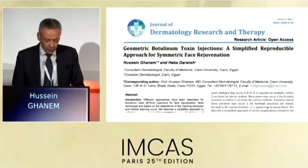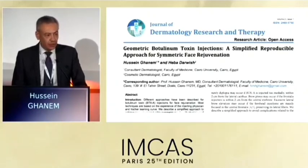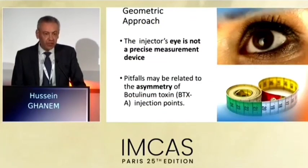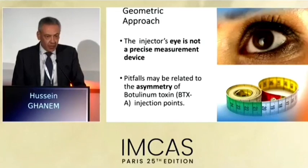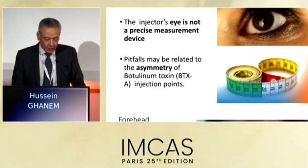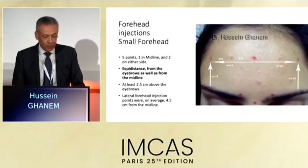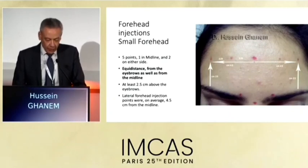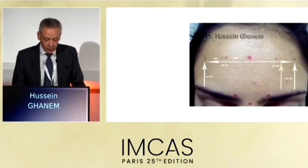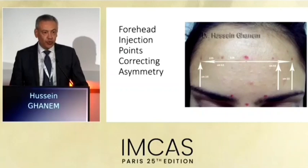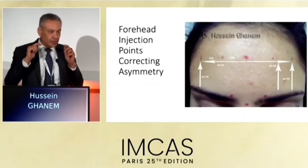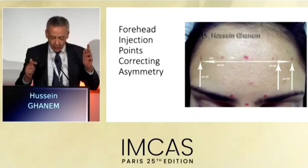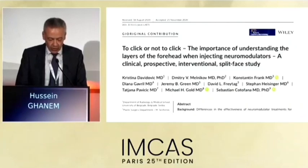This is the 21-point technique. I've published a geometric injection technique with my colleague Dr. Herbert Arouich, where we take measurements. The point is that the injector's eye is not an exact measuring tool, so pitfalls could be related to asymmetry — one eyebrow different than the other, or higher or lower. So we take measurements from the brow and from the midline. If we want to elevate the lateral eyebrows, we move the injection points more medially, so we preserve the lateral frontalis which compensates and lifts the lateral eyebrows.